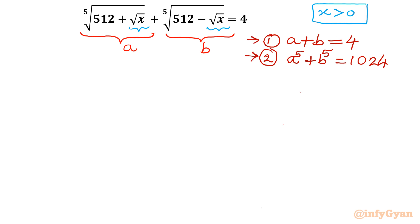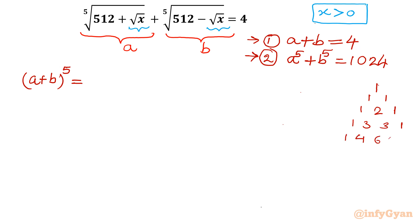Now I am going to consider the 5th power of equation 1, expanding (a plus b) to the power 5. Before that we need the coefficients, so I am using Pascal's triangle. The required row is 1, 5, 10, 10, 5, 1. These are the coefficients of our expansion.